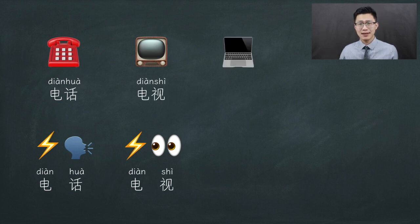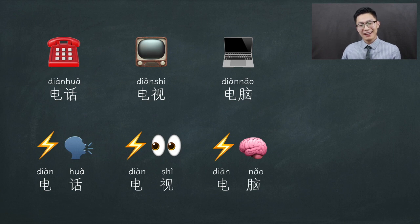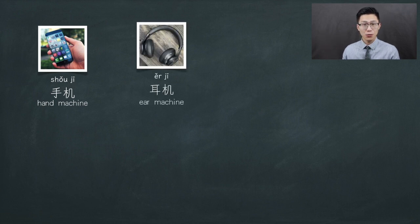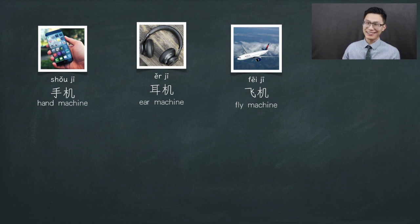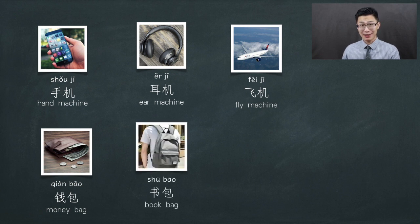So what about a computer? It needs electricity and it works kind of like a super brain. Yes, an electric brain — dian nao — which means computer. Here comes a mobile phone: a machine that you use by your hand, so it's called shou ji, which means hand machine. For a headphone, it's called er ji, which means ear machine. And how about a big machine that you can fly? A fly machine — indeed, fei ji for airplane. A wallet? We just call it money bag — qian bao. And how about a book bag? Shu bao for book bag.